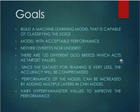Since there isn't enough data, the accuracy of the model will be compromised. Therefore, the performance of the model needs to be increased, which could be done by adding multiple hidden layers to the CNN model and also by varying the hyperparameters.